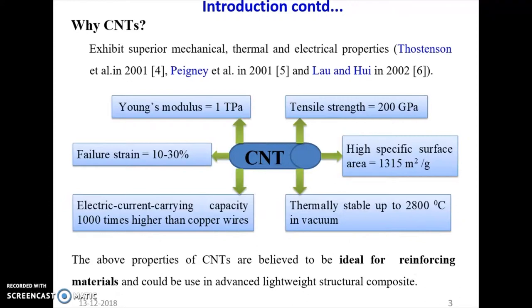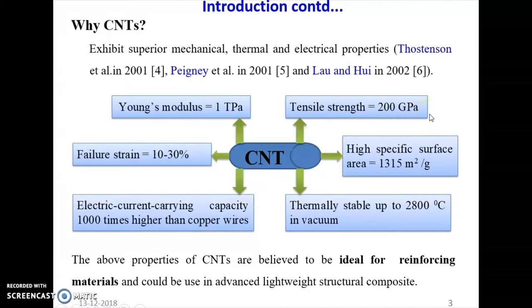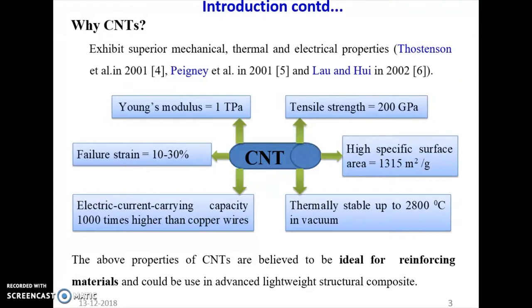Now the question is: why CNT? Why do we want to replace the existing carbon fibre by CNT? The reasons — if we see the properties of CNT: the Young's modulus of CNT is 1 terapascal, and tensile strength is 200 GPa. Maximum machine components are made of steel. The Young's modulus of steel is 210 GPa, but Young's modulus of carbon nanotube is 1 terapascal. And tensile strength of carbon nanotube is 200 GPa, whereas tensile strength of steel is 250 MPa. So this value indicates how much strength CNT has.